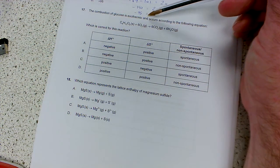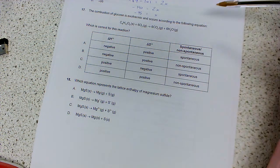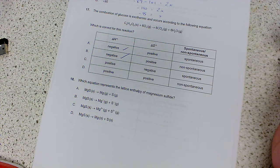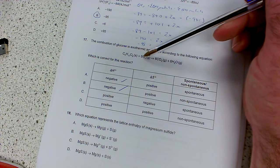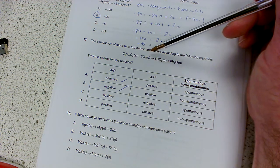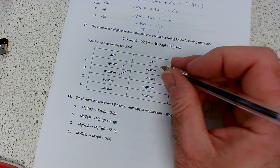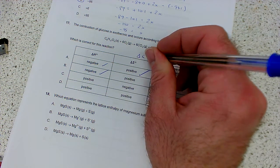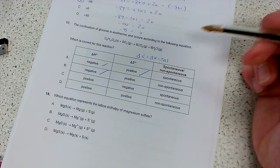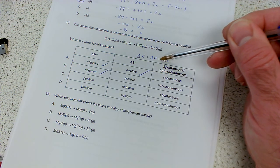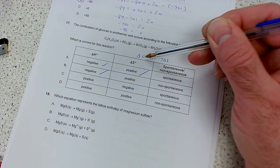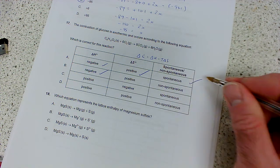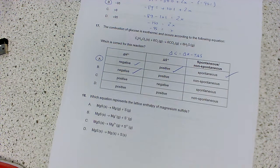Question 17: the combustion of glucose is exothermic and occurs according to this equation. Which is correct for this reaction? Delta H is negative because it's exothermic - it's respiration basically. Delta S, the change in entropy - we've got six molecules of gas becoming twelve molecules, so there's an increase in disorder, so delta S is positive. Is this spontaneous? Delta G equals delta H minus T delta S. We've got a negative value minus a positive value, so it's only going to become more negative. Delta G is always negative - it's spontaneous at any temperature because you've got an exothermic reaction with increasing disorder. That's going to be A.